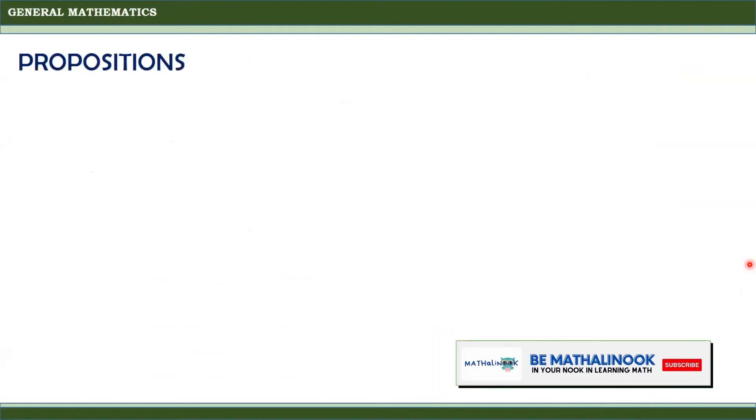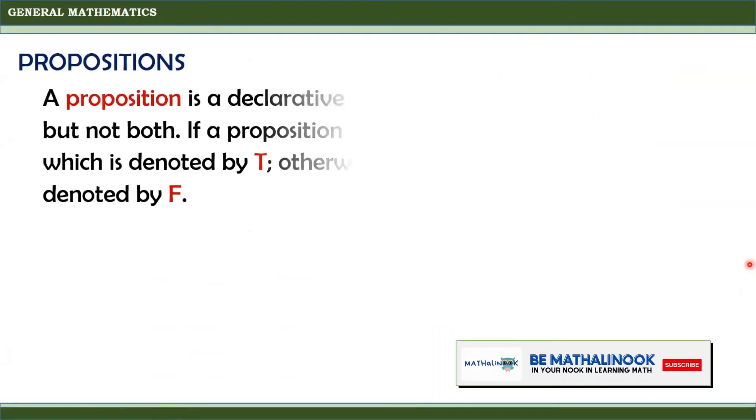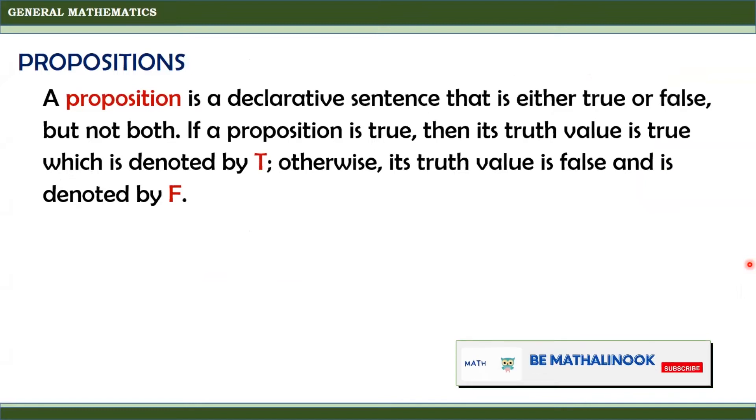Let us define first what are propositions. A proposition is a declarative sentence that is either true or false, but not both. If a proposition is true, then its truth value is true which is denoted by T. Otherwise, its truth value is false and is denoted by F.